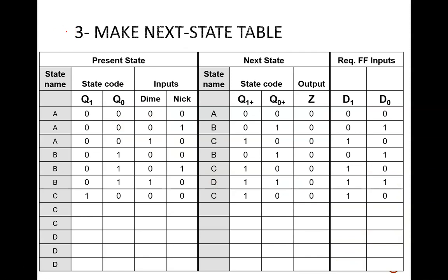Step 3 is the next state table. I have it mostly complete here. Notice the same three broad sections up top. Present state, next state, and required flip-flop inputs. Because there are only four states, I can use just two bits for the state codes. Sensibly, I decided to assign these codes in ascending order. 00 for A, 01 for B, 10 for C, and 11 for D.